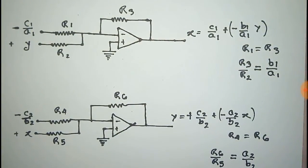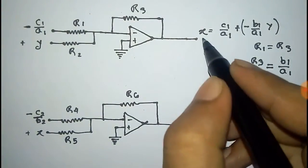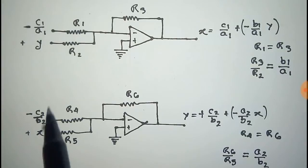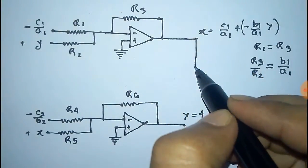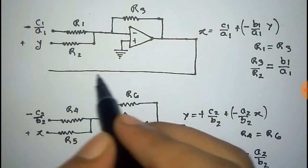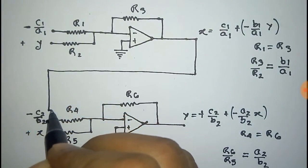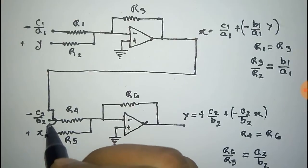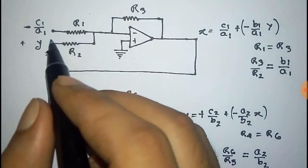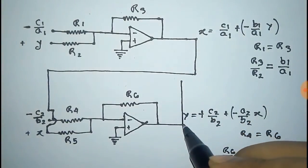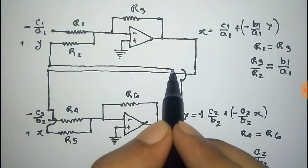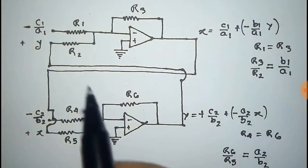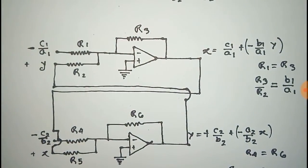Now you can see the two outputs are x and y. The x from the first op-amp and the x used as input in the second op-amp are the same, so connect them. Similarly, the y output and the y input are the same, so connect them. Thus we get the total circuit for the solution of linear equations using op-amps.